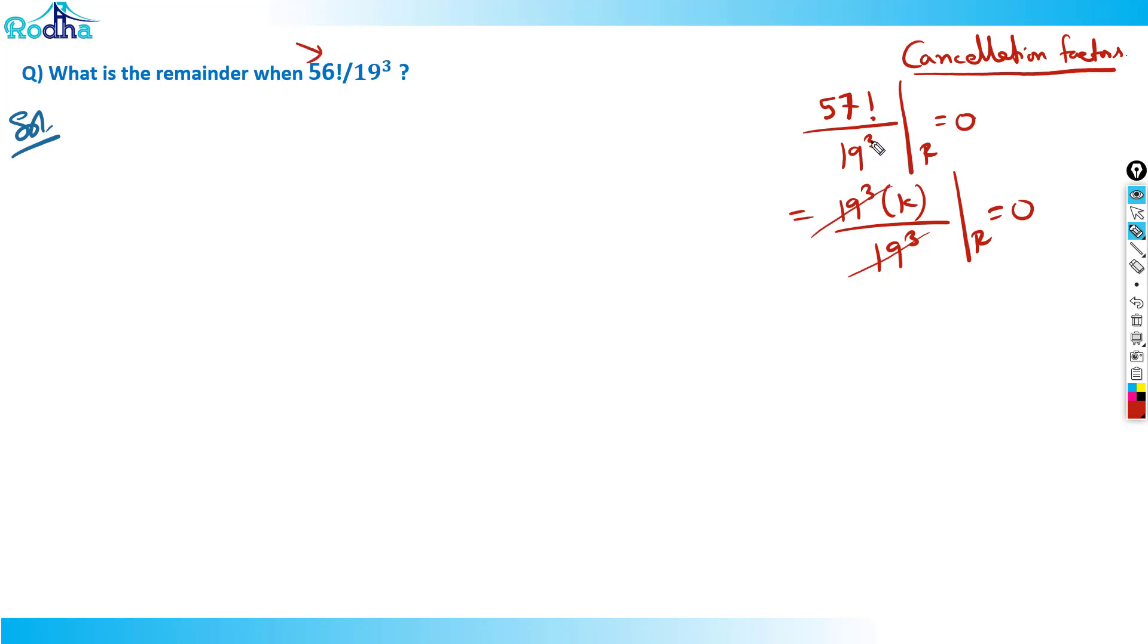But it is 56 factorial, so there are two 19s present here. I can say that there are two 19s present and it won't completely cancel. In cancellation factor, we just try to remove that common part, so 19 square is the common part here.